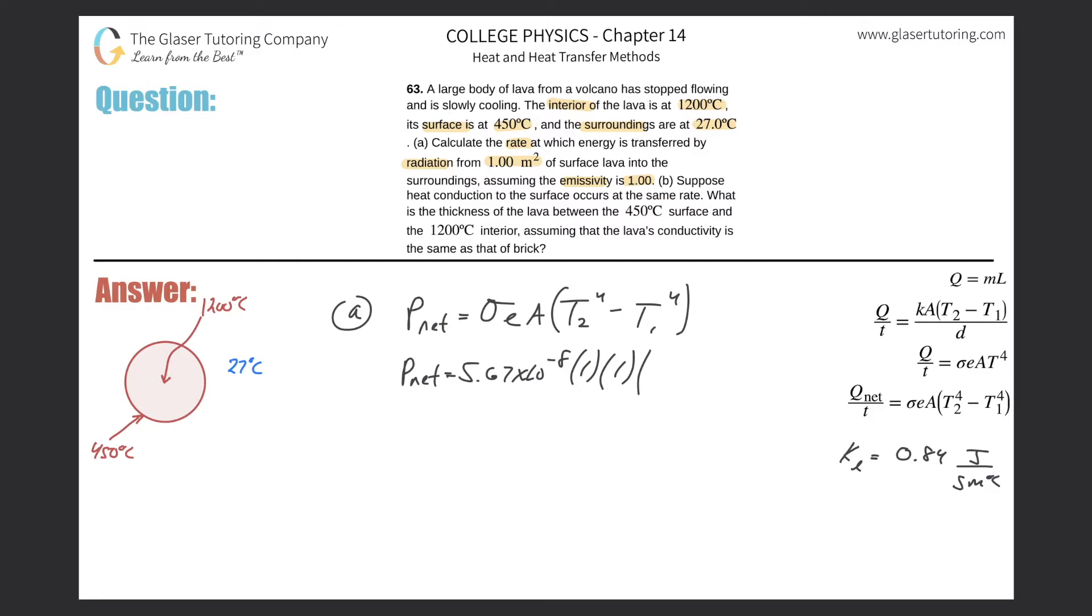Now it says from the lava to the surroundings, so basically it should be negative, but even if you left that out, it's really not a big deal.